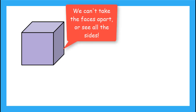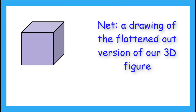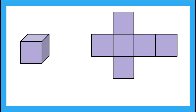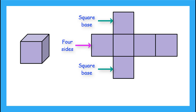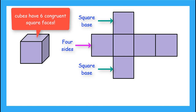We can't take the sides apart like in our last example, but we can use a net to help us visualize our solid figure. A net is a drawing that shows the flattened out version of our figure. Our cube would have a net that looks like this. We have our square bases here, and then our 4 sides are here. Remember, this is a cube, so that means all 6 sides are congruent squares.